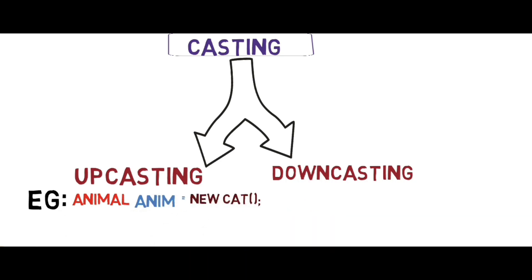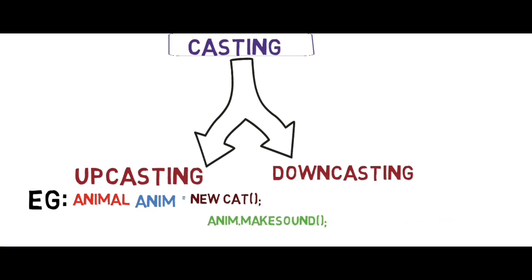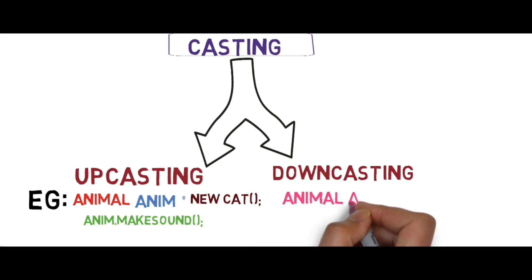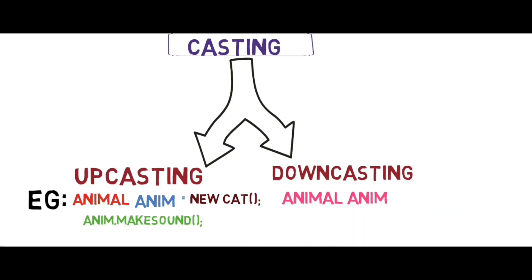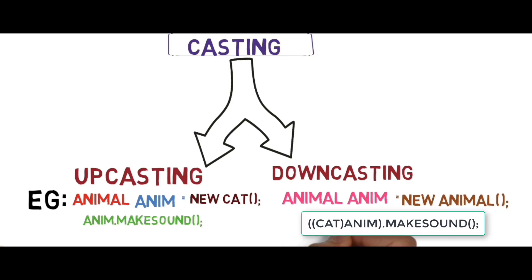The reference object is calling the makeSound method which belongs to the subclass. Currently we are discussing object typecasting. In downcasting, we create the object of the parent class. Here, casting animal to cat then calling makeSound.